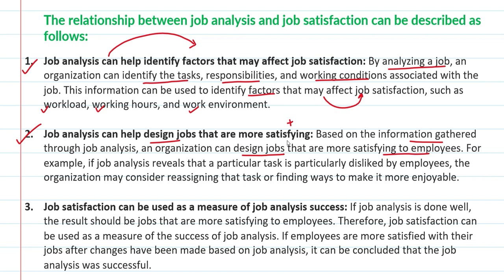For example, through job analysis you may know that a particular task is one that people don't feel good about — most employees don't like that particular thing. So the organization may consider how to make that task better. Suppose someone has to do a task for 2 hours a day but finds only that part difficult — the rest of the work is fine. So the organization can think about how to make it more interesting.